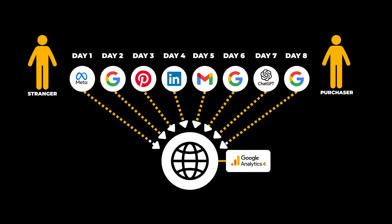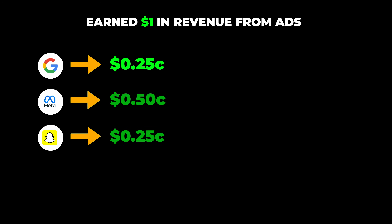The whole point of this is to watch what happens in a user journey — see where they arrive from initially, see how many touch points from various different channels happen along the ride, and then to see what the last thing they did before they purchased. So the idea here is when you earn a dollar in your store, GA4 is going to help attribute that conversion value between these different points in the journey.